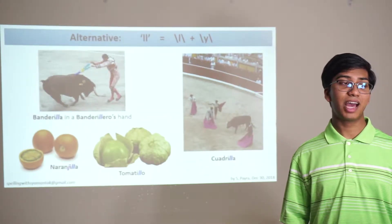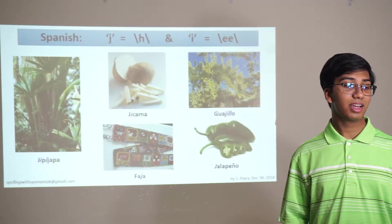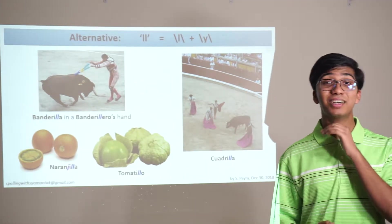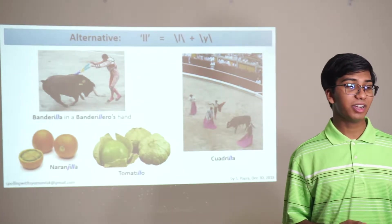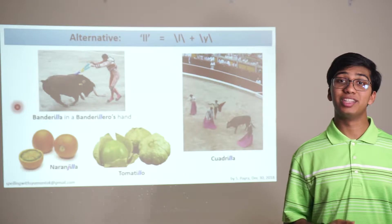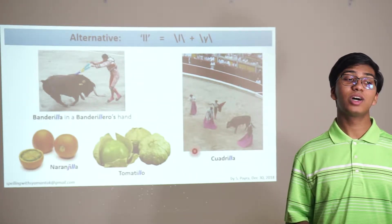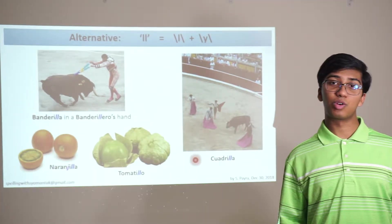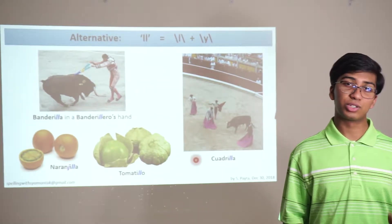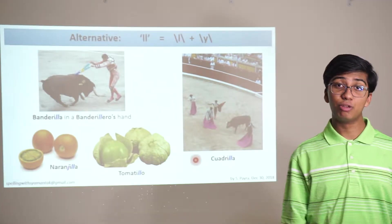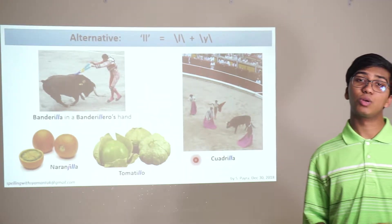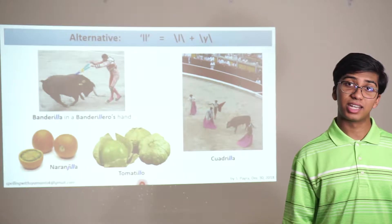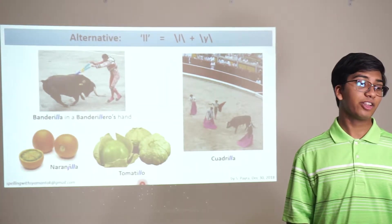Sometimes you have both the L and the YA combined when you have an LL — for example, banderilla in a banderillero's hand, or cuadrilla, a team assisting a matador in the bullfight. Note that these words are not necessarily pronounced this exact same way in original Spanish; it's a sort of blend of the L and the YA that the dictionary chose to keep. Words like tomatillo also have alternate pronunciations, and other words like naranjilla — note there that the J is an H sound.